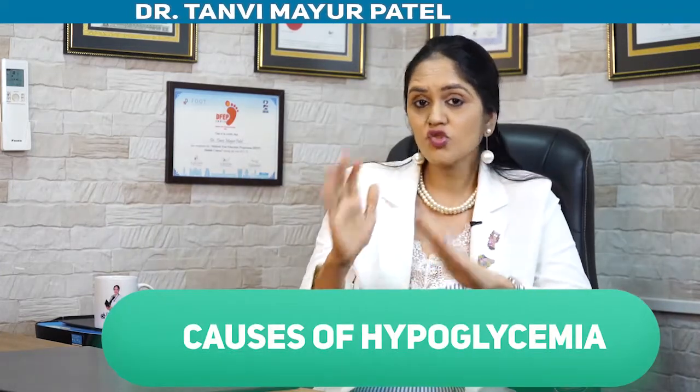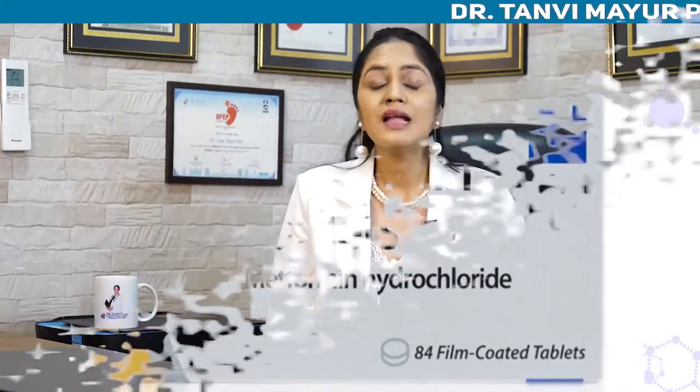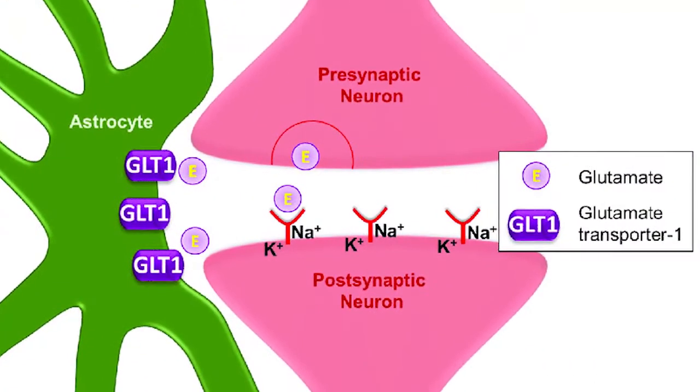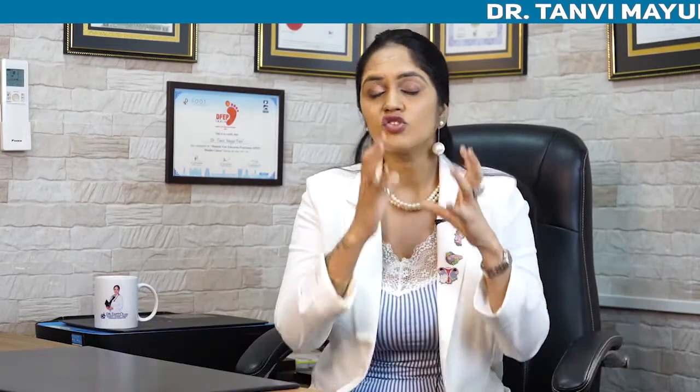The hypoglycemia risk increases more if you take these medicines along with insulin. There are many diabetes medicines that do not cause hypoglycemia on their own unless combined with insulin or sulfonylurea. These include metformin, SGLT2 inhibitors, GLP-1 receptor agonists, and DPP-4 inhibitors such as sitagliptin, vildagliptin, and linagliptin — these alone will not give you low blood sugar.